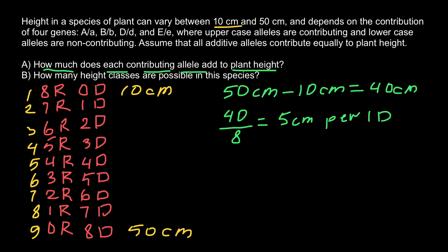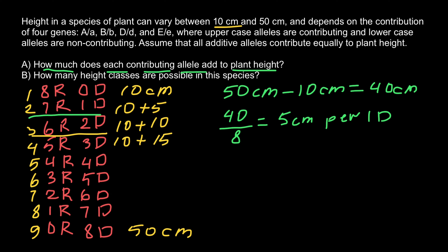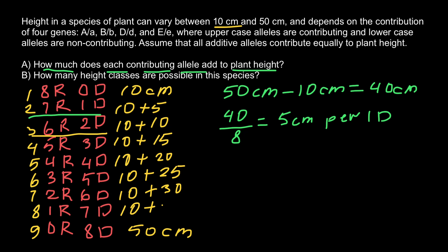For example, what is the height of each genotype class? With one dominant allele: 10 plus 5. With two dominant alleles: 10 plus 10. With three: 10 plus 15. Then 10 plus 20, 10 plus 25, 10 plus 30, 10 plus 35, and finally 10 plus 40, which equals 50 centimeters.